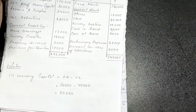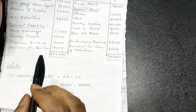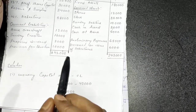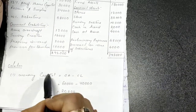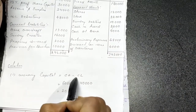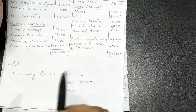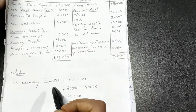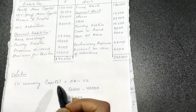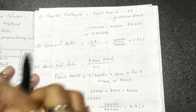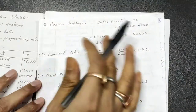So 20,000 is the answer for working capital. Keep in mind the most important point: working capital's formula is current assets minus current liabilities. Now we will solve the next formula.